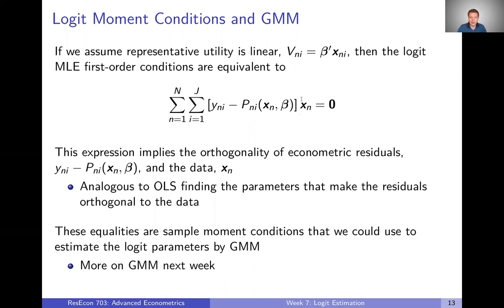And then here we've just got data. So what this is saying is that in our sample, our residuals and our data are orthogonal to one another — a sample orthogonality condition. This is analogous to OLS regression finding parameters that make the residuals orthogonal to the data.